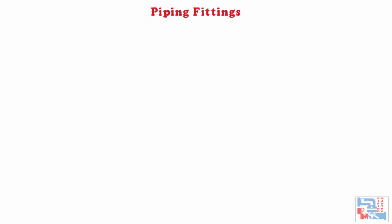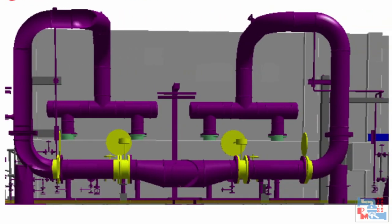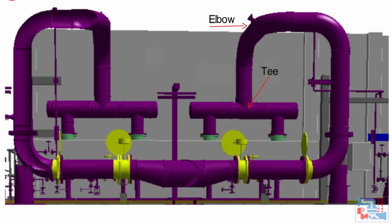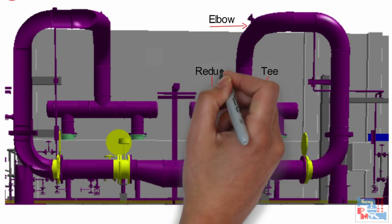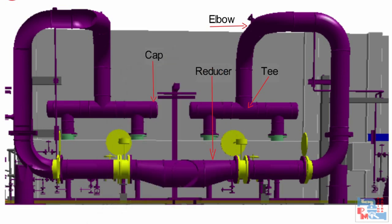Why do we need fittings? Pipe fittings are used to make the piping system flexible and complete — for branching of connection, change in direction, and size reduction. There are different ways by which fittings can be classified, like material, pressure-temperature rating, and end connection.